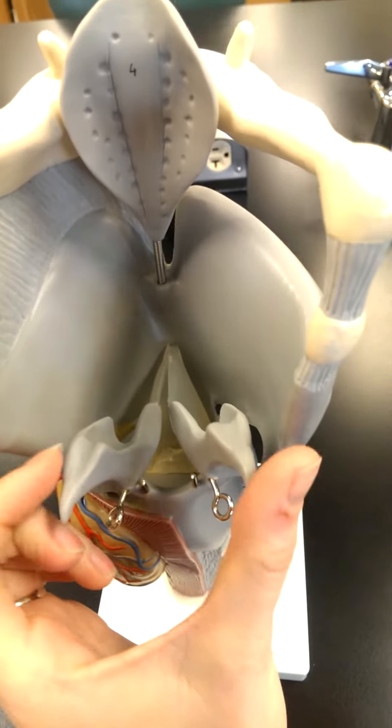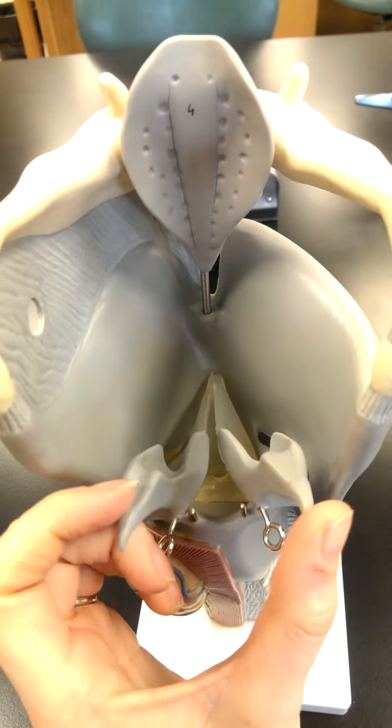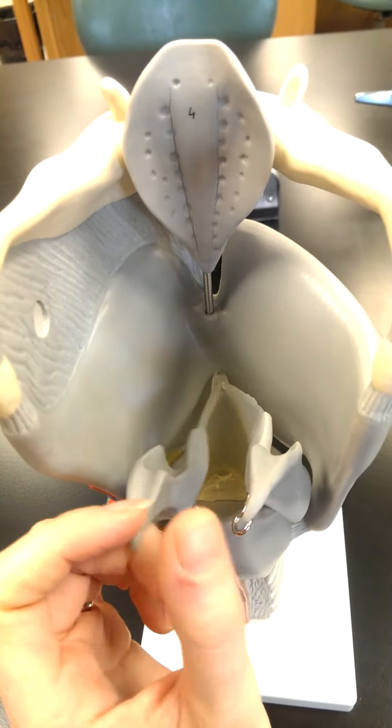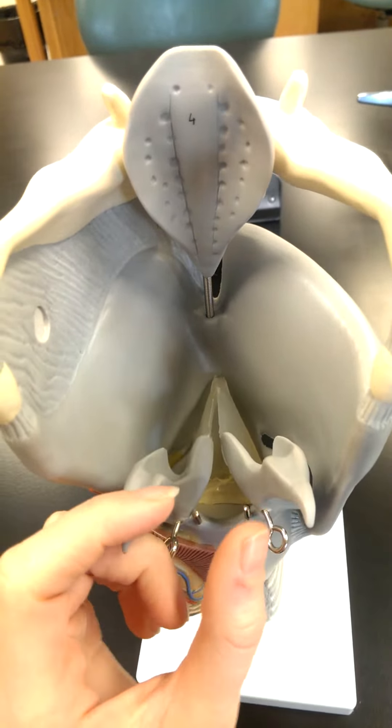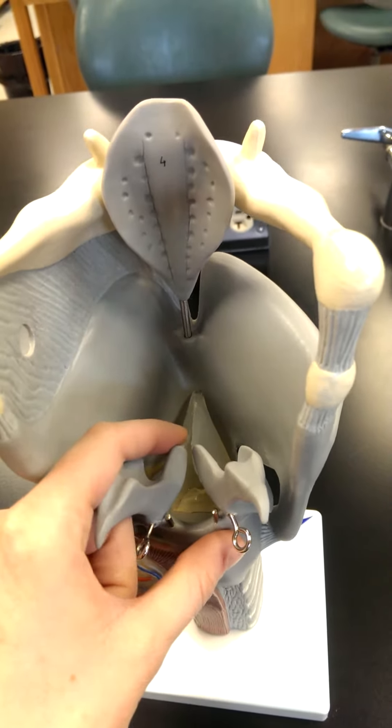The glottis is a space here, and we can see that glottis open and then closed. Again, open and closed. The two structures that are moving there, these ones in here, are vocal cords.